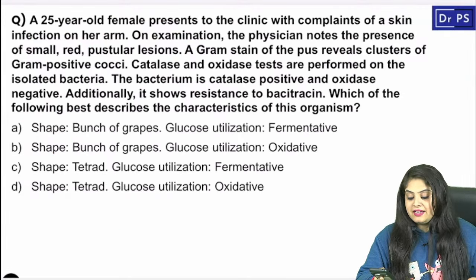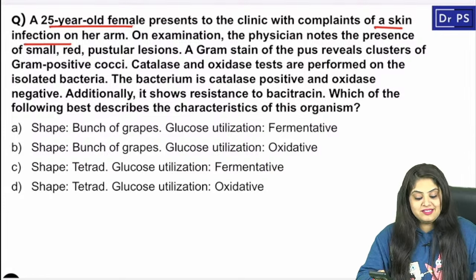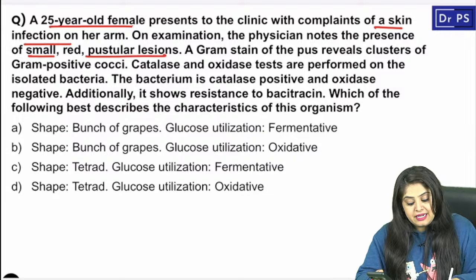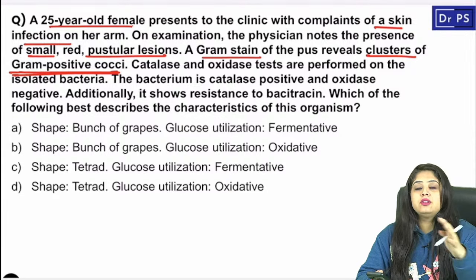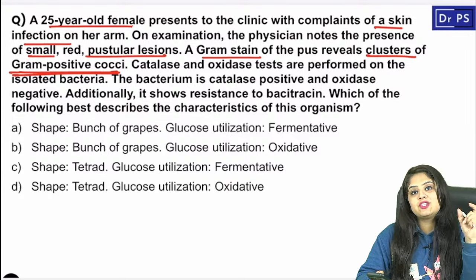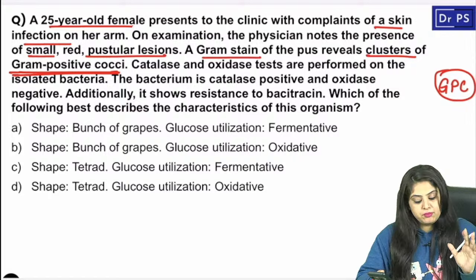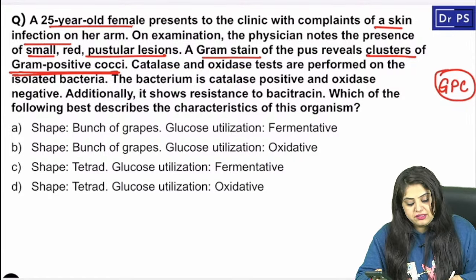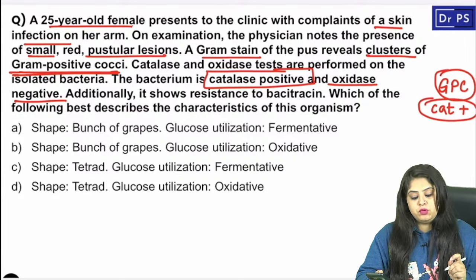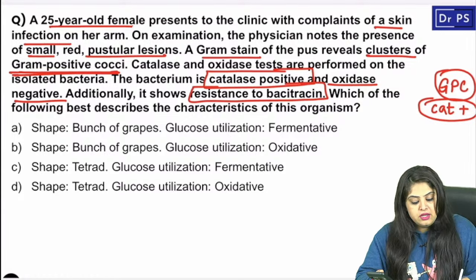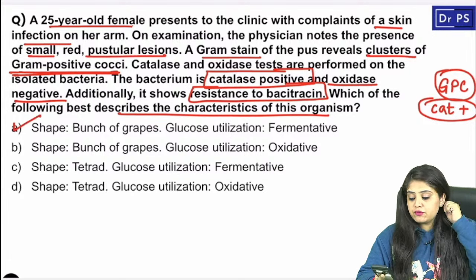Question 1: A 25-year-old female presents with small red pustular skin lesions. Gram staining reveals clusters of gram positive cocci. In the exam, first categorize the chapter — here it's gram positive cocci. The organism is catalase positive and oxidase negative, and resistant to bacitracin. The next list to prepare is catalase positive organisms.